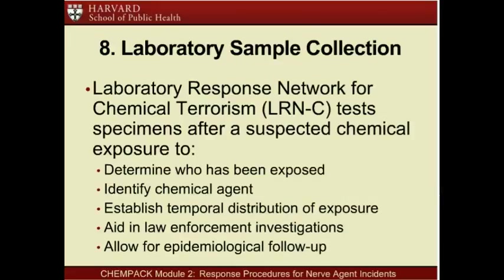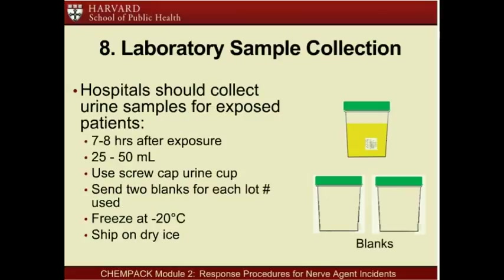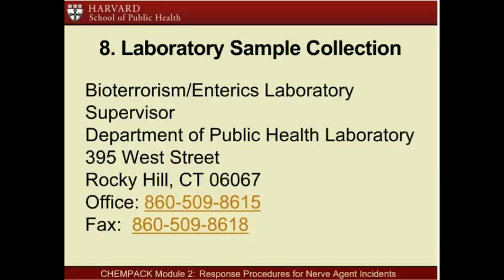Connecticut can analyze for nerve agents, sulfur mustard, ricin, abrin, cyanide, toxic metals, volatile organic compounds, and other chemical weapons. In an unknown exposure event, clinical specimens can also be sent to the CDC for identification using the Rapid Toxic Screen, or RTS, which can analyze for over 150 chemicals or metabolites. After a suspected nerve agent incident, hospitals should collect urine samples from potentially exposed patients and send these to the Connecticut Department of Public Health laboratory for analysis. When possible, urine samples should be collected seven to eight hours after exposure—25 to 50 milliliter samples in screw cap urine cups, with two blanks sent for each lot number used. Samples should be frozen at negative 20 degrees Celsius and shipped on dry ice by courier to the state laboratory.